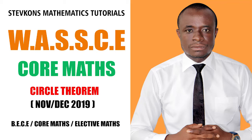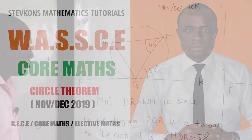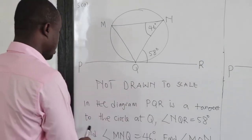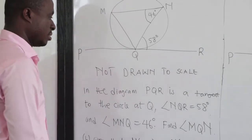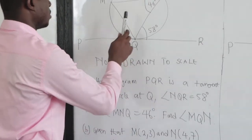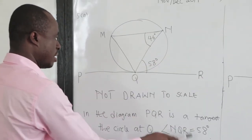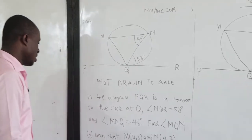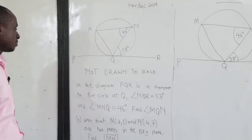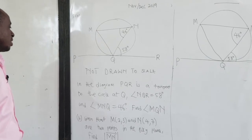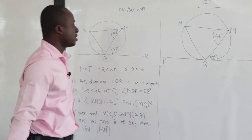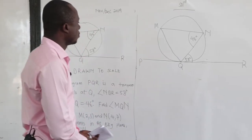Question number 5. We have been told that in the diagram PQR is a tangent to the circular scale, angle NQR is 58 degrees, and angle MNQ equals 46 degrees. We should find angle MQN — the angle here which is MQN.